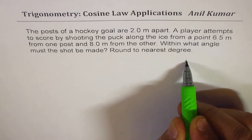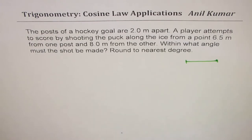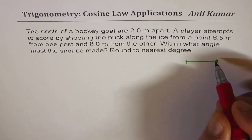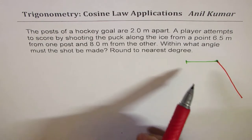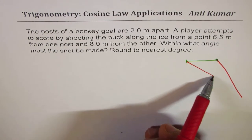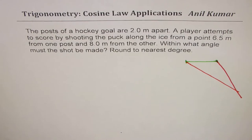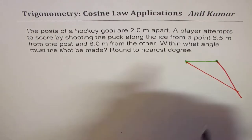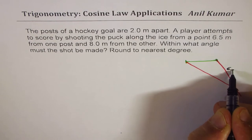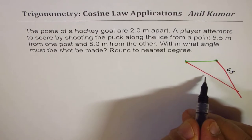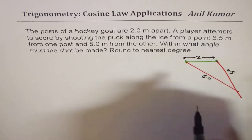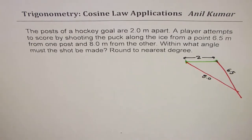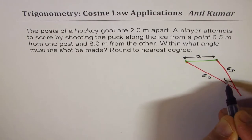Let's first sketch. Let us say that is the hockey post. He is shooting from one side — it is 6.5 meters — and the other one is 8.0 meters. So the shot is being made from somewhere here, and that gives you the angle between the two. One side is 6.5 meters, the other is 8.0 meters, and this distance between the posts is given as 2 meters. All dimensions are in meters. We have to find this angle theta.